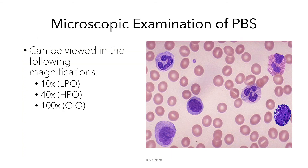Let's proceed to the microscopic examination of peripheral blood smears. You can view the peripheral blood smear using the following magnifications: 10x, which is the low power objective; 40x, which is the high power objective; and 100x, which is the oil immersion objective.